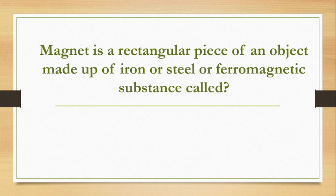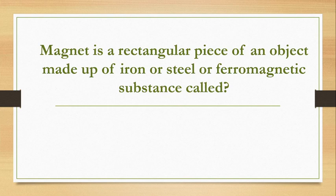It is made up of iron, steel, or ferromagnetic substance. Ferromagnetic means it is like a metal such as iron, nickel, cobalt, or alloys that become magnetic. The answer is bar magnet — a rectangular piece made of iron or steel or ferromagnetic substance.